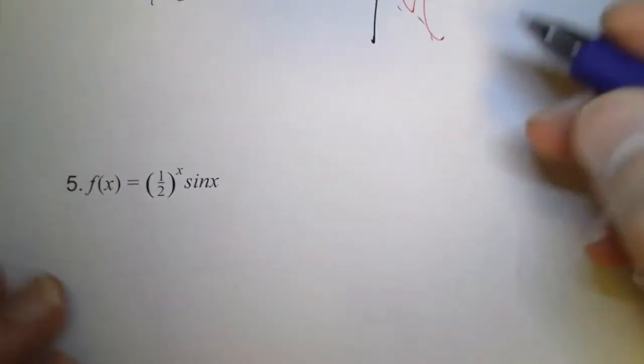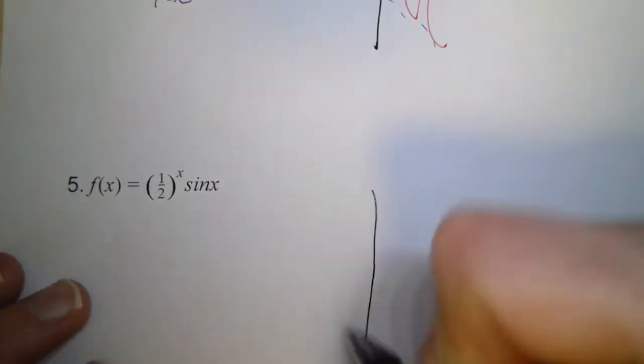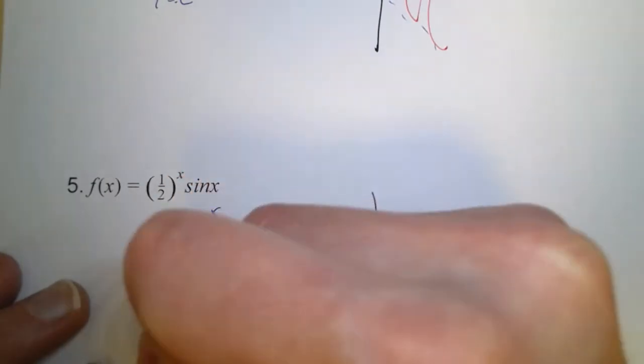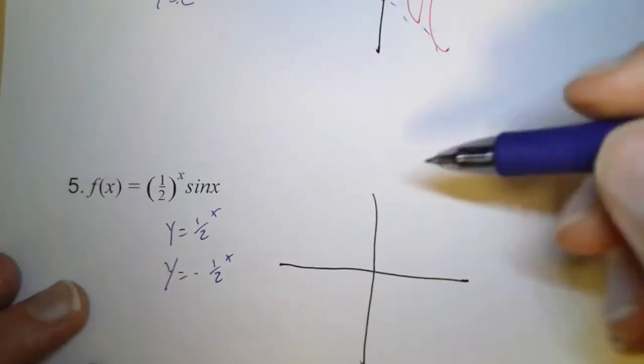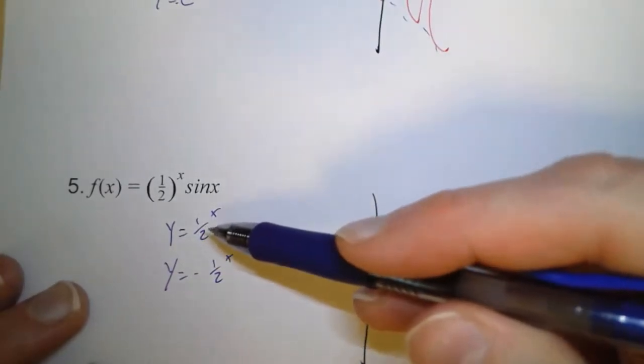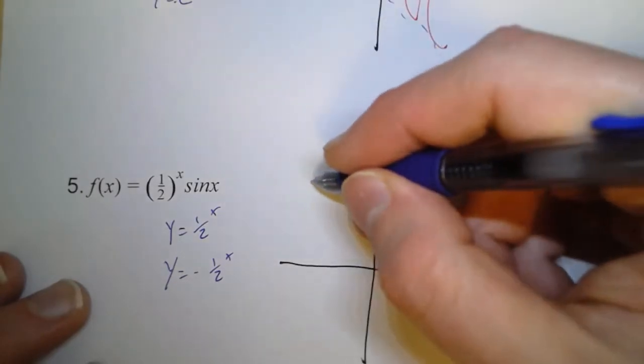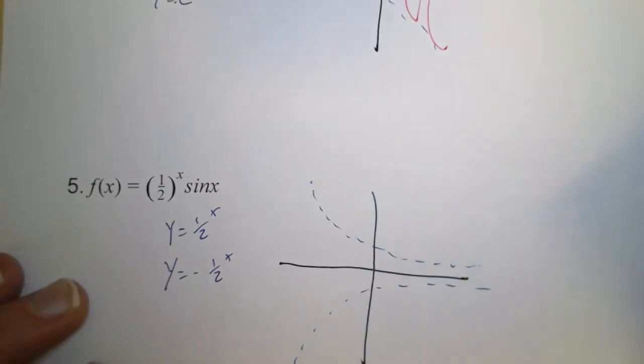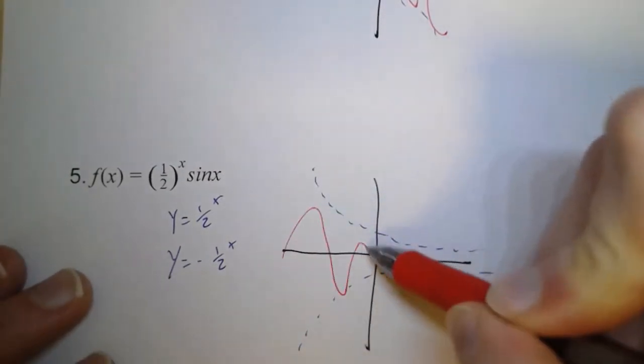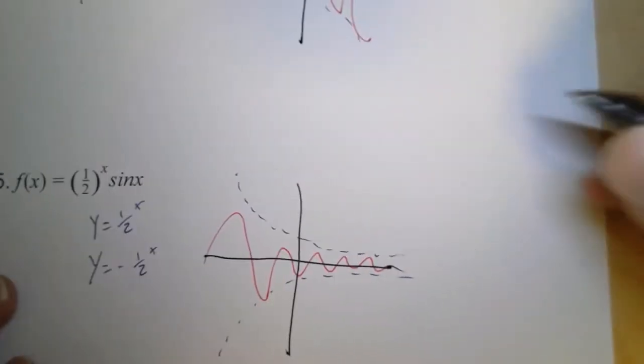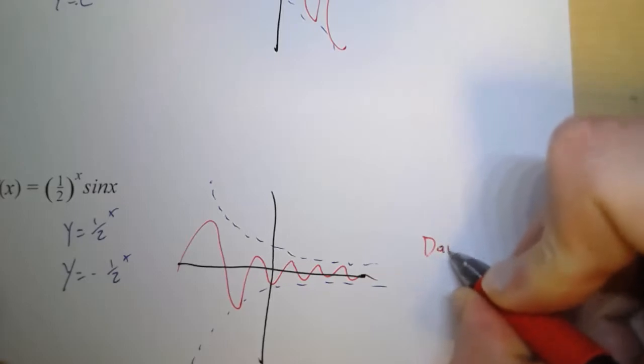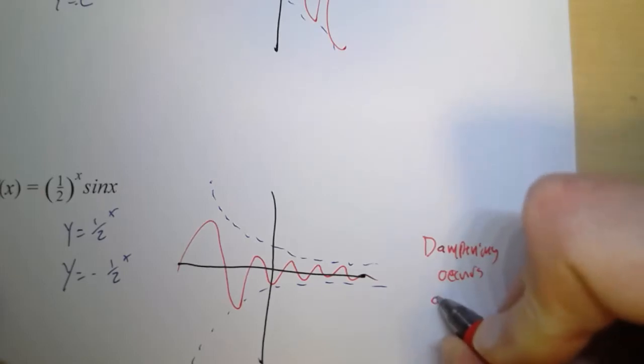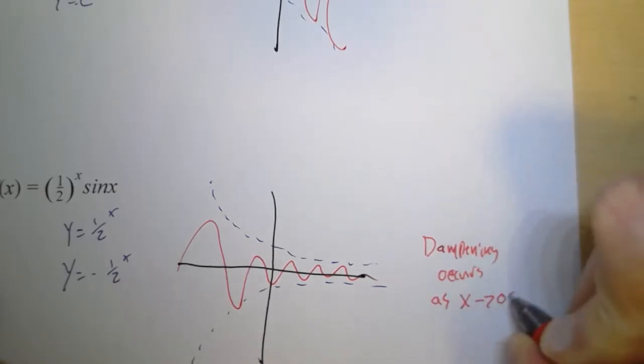So then, for this one, we have 1 half to the x times sine of x. So our boundaries are y equals 1 half to the x and negative 1 half to the x. Now this is the same thing as 2 to the negative x. And so this graph is going to come down like this. And this graph is going to come up like that. And so our function is going to fit in between there. So for this one, our dampening occurs as x goes to positive infinity.